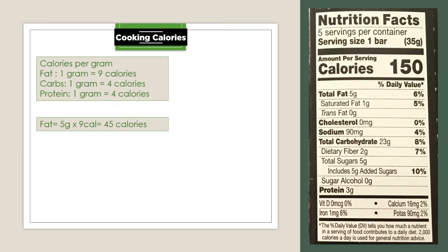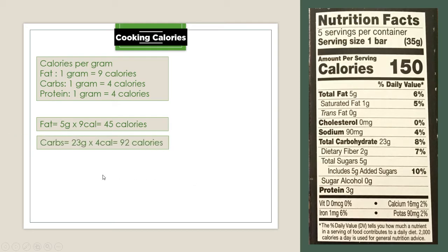Next is the carbohydrates with a total of 23 grams. We will no longer include total sugars because total sugars is already included in the total carbohydrates. 23 times 4 equals 92 calories.